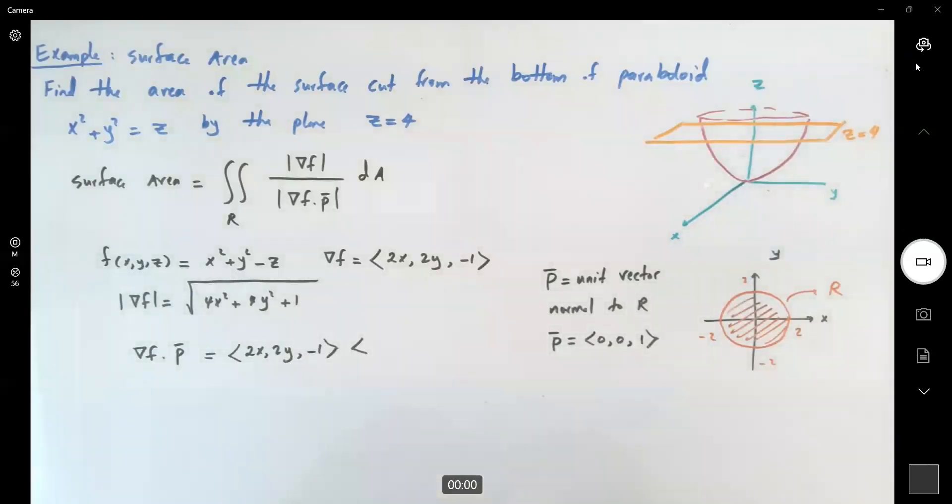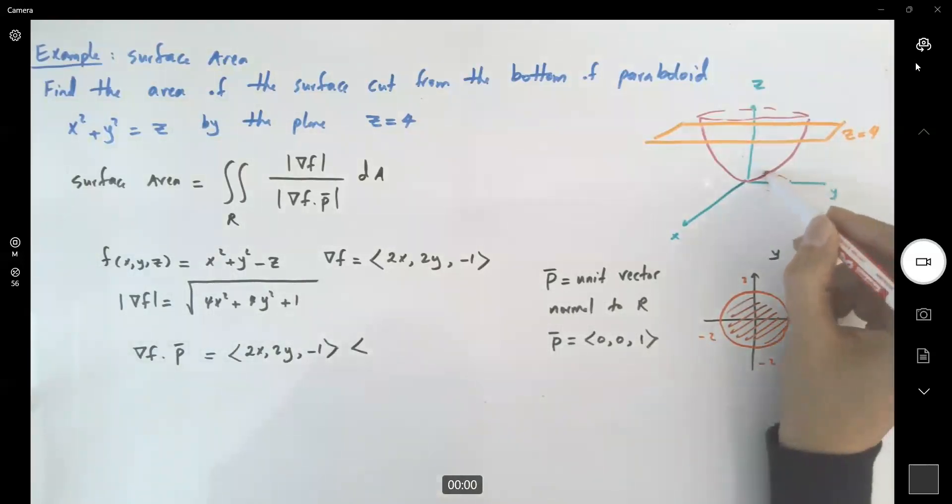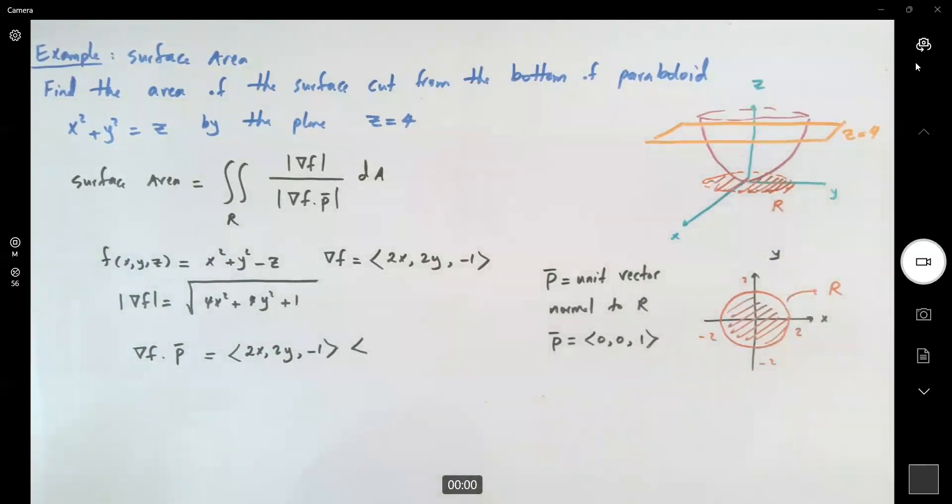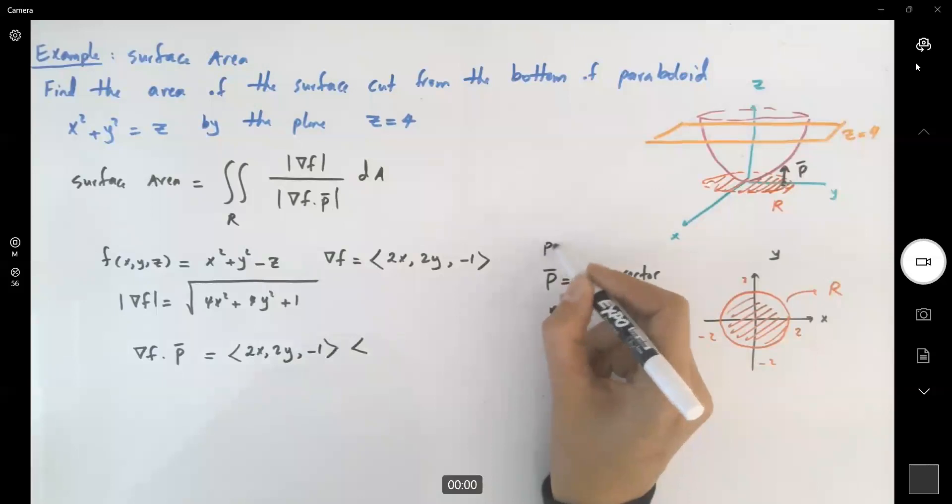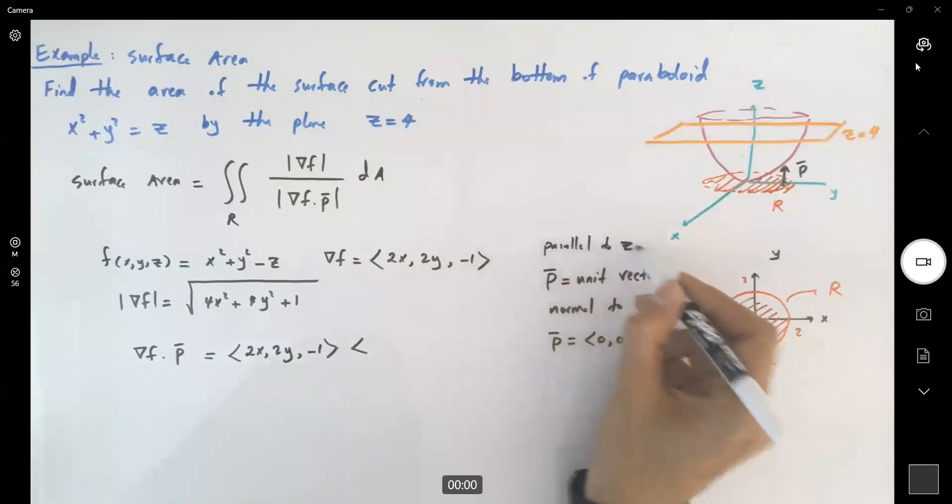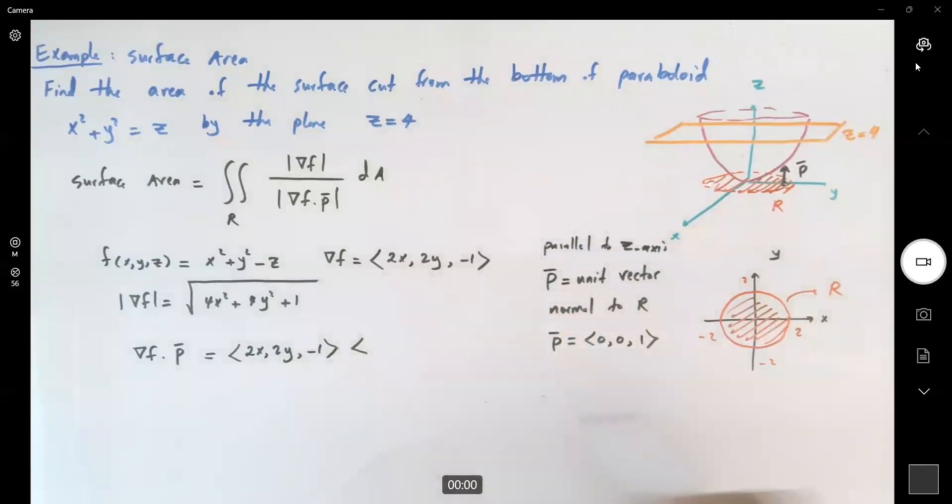So take a look at your region in three dimensions. This is your region r. You're looking for a unit vector normal to this region. This is your vector p. The very first component and second component must be equal to 0 because it's parallel to the z axis. And since it's a unit vector, the last component must be equal to 1. The magnitude of p is equal to square root of 0 squared plus 0 squared plus 1 squared, which is just 1.